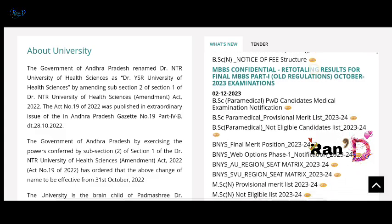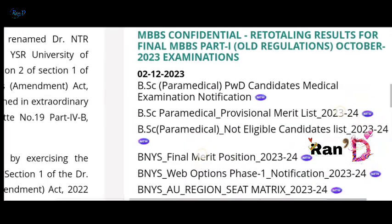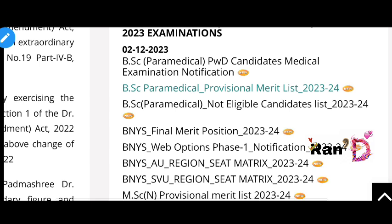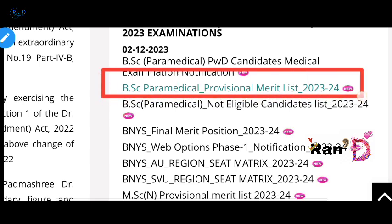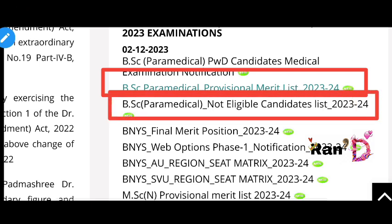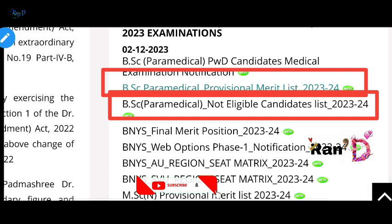I am going to find the second December update. There are two links to check: the first link is for the provisional merit list of eligible candidates, and the second link is for not-eligible candidates.